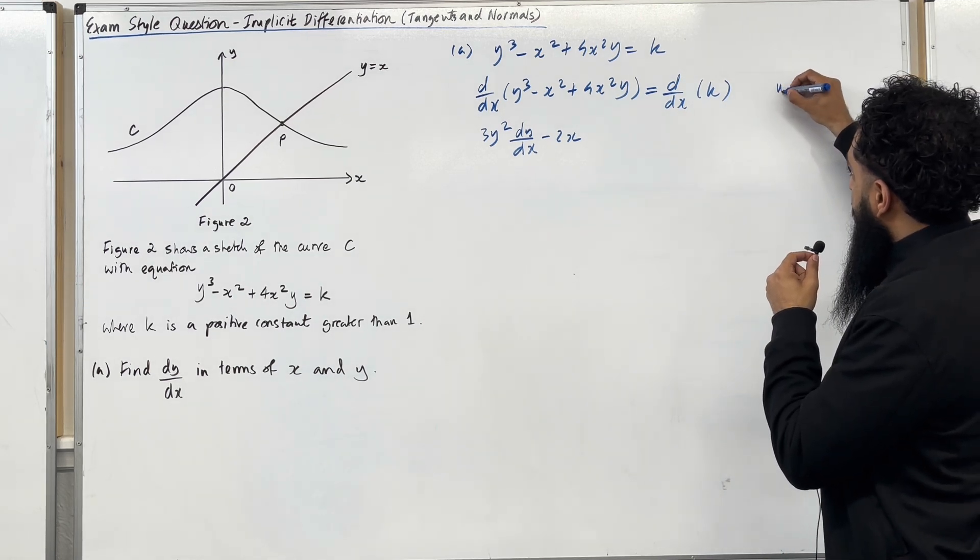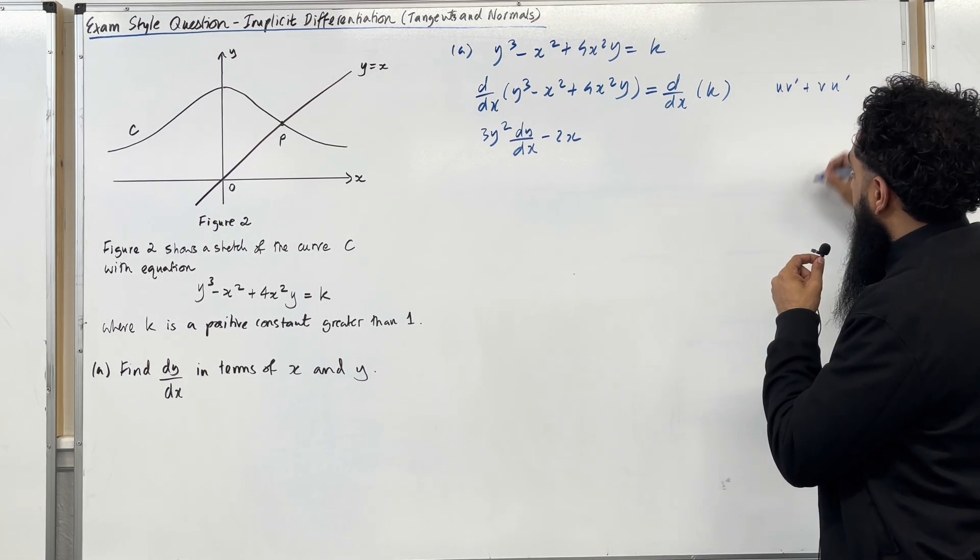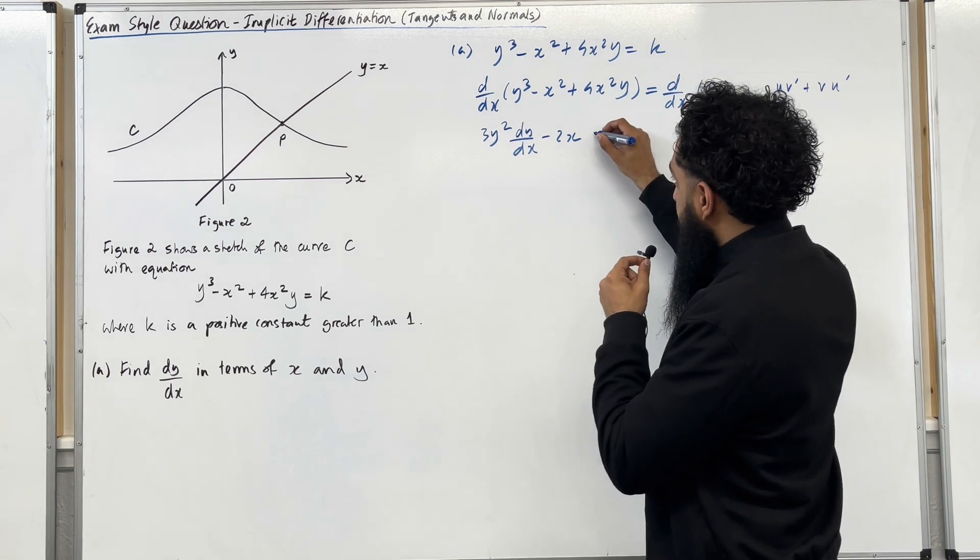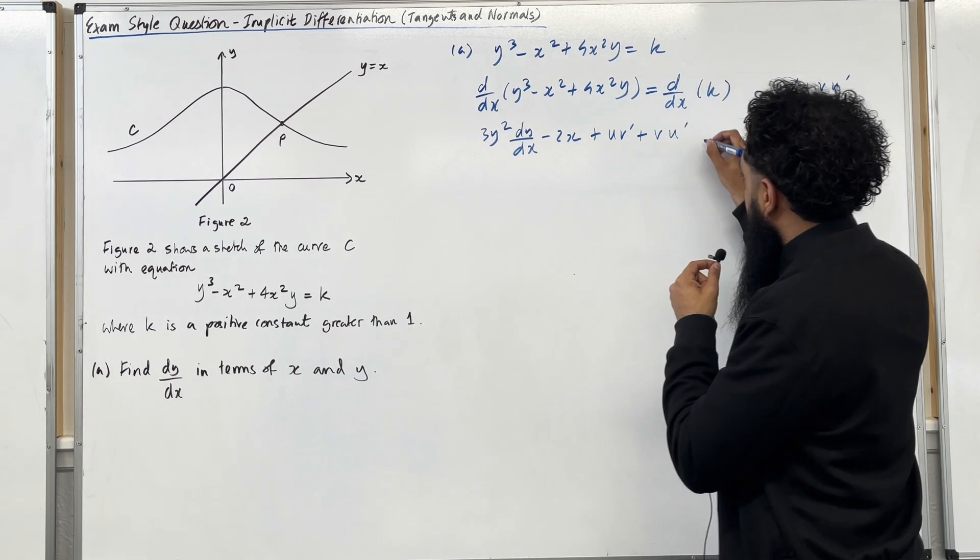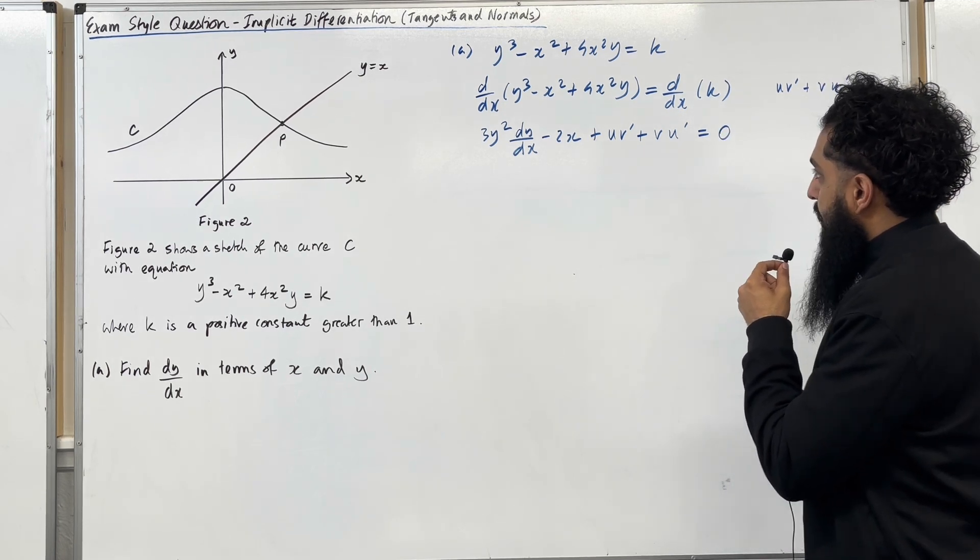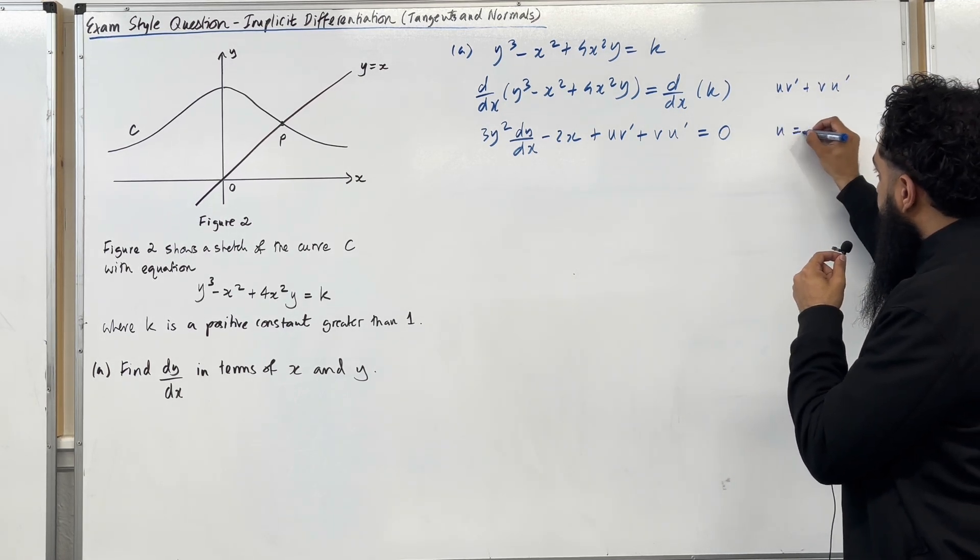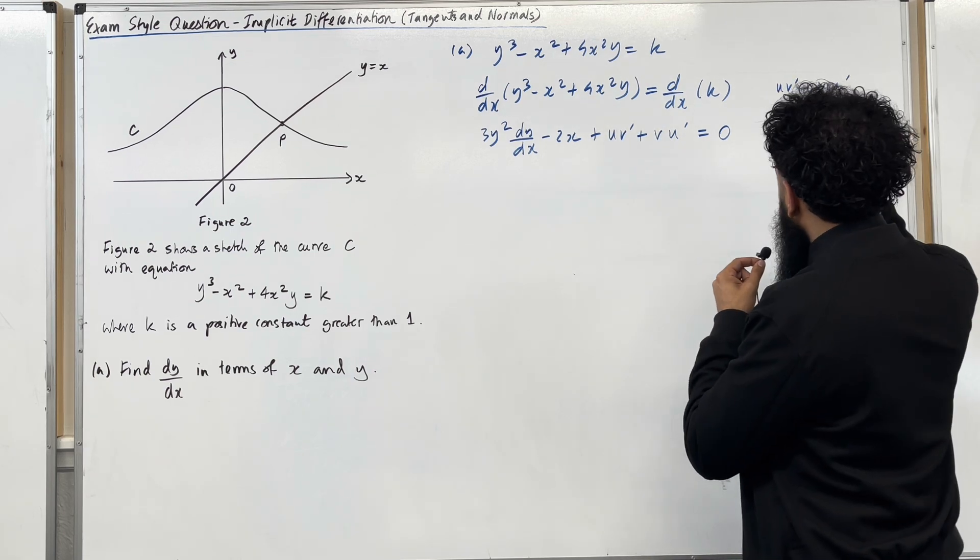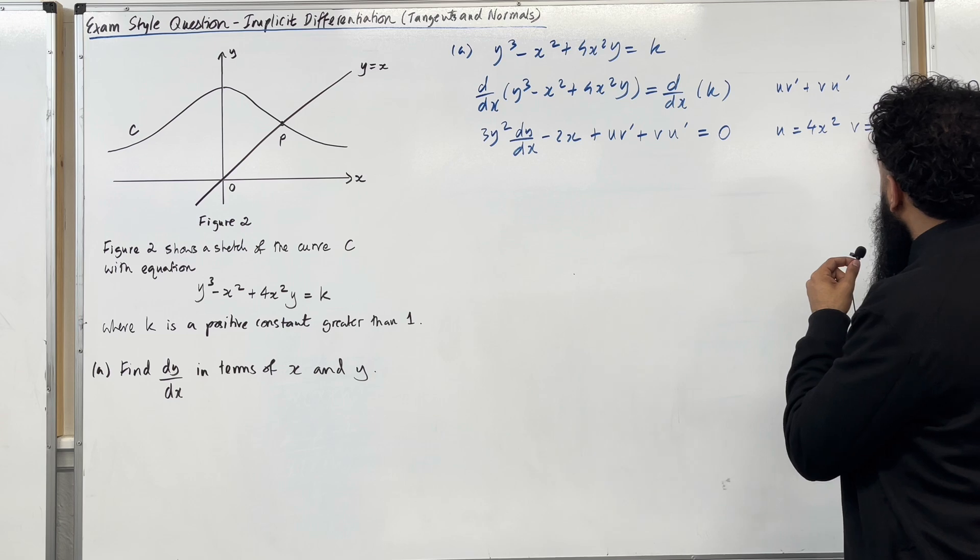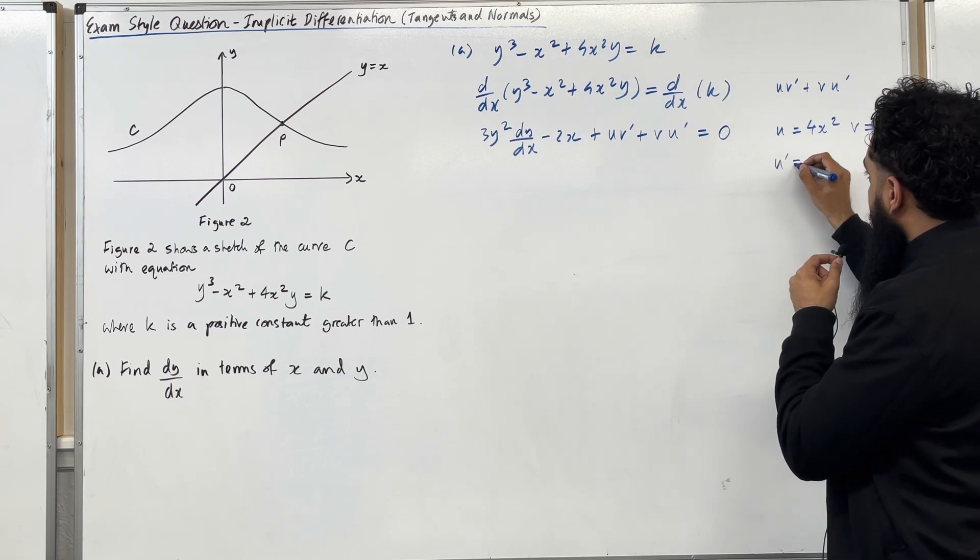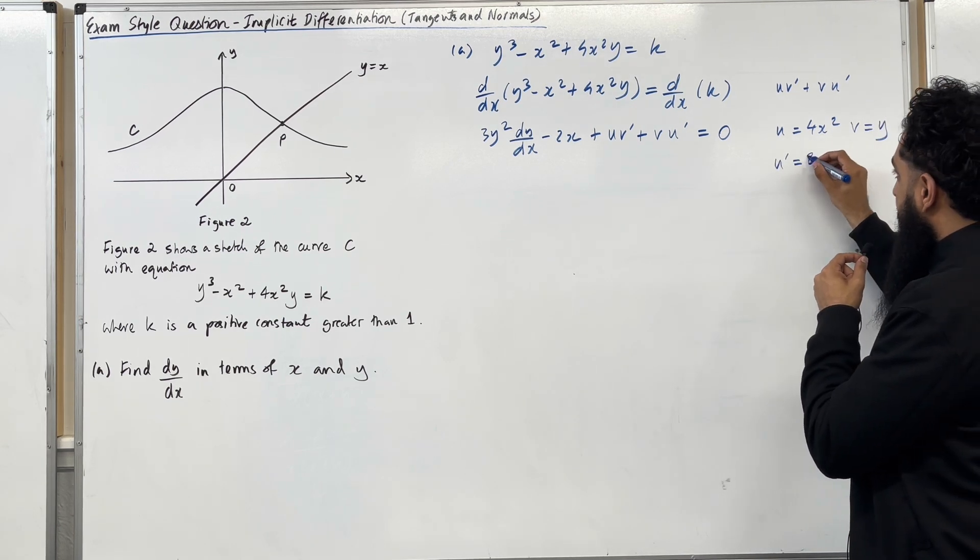And the product rule is u v dash plus v u dash. So I can write plus u v dash plus v u dash equal. The k differentiates to 0. So my u is 4x squared and my v is y. So u dash differentiate 4x squared. This gives me 8x.